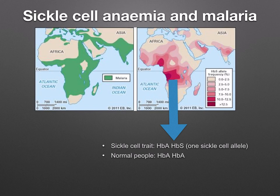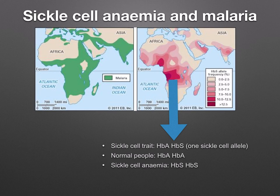Normal people would be HbA HbA, and those with sickle cell anemia will be HbS HbS. A person who is a carrier with the sickle cell trait doesn't have all the symptoms of sickle cell anemia. They also have a much higher resistance against malaria than those people who have normal hemoglobin alleles. We say this process is called natural selection — those people with the sickle cell trait have been selected for in malarial areas.